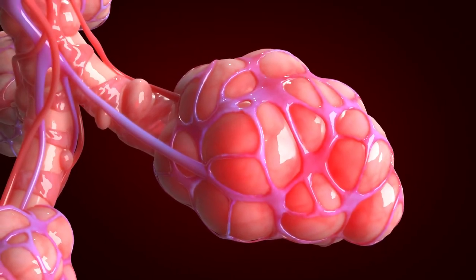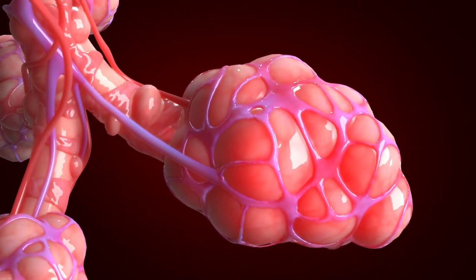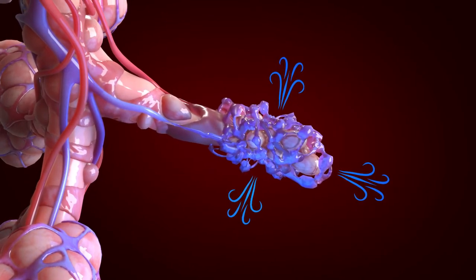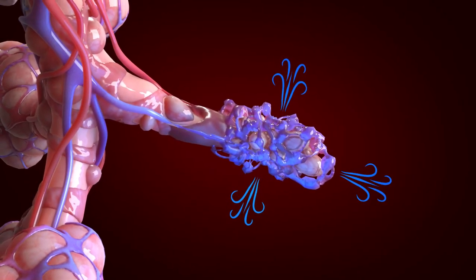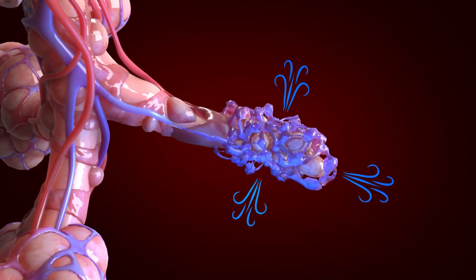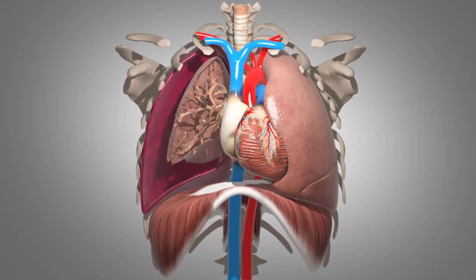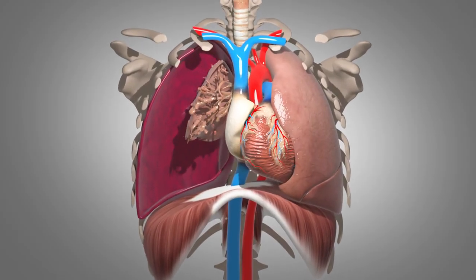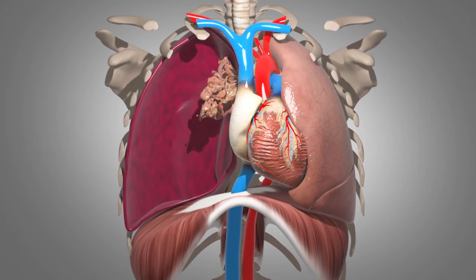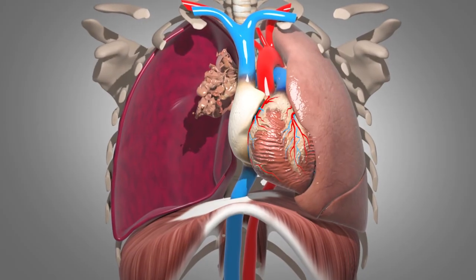In fact, it might just cause damage to the alveolus in the form of volutrauma — damage caused by excessive volume — or barotrauma, too much pressure. Damage to the alveoli like this can even lead to pneumothorax, where air leaks out of the lung and into the thorax, causing the lung to collapse.